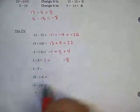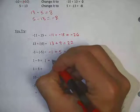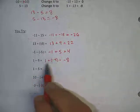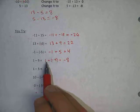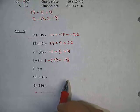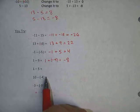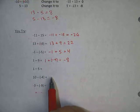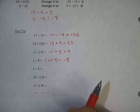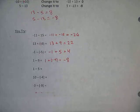One more: 1 minus 9. I know 9 minus 1 is 8, so 1 minus 9 is negative 8. But let's use keep, change, change: keep the 1, change subtraction to addition, change positive 9 to negative 9. Think about your cards — if you have a positive 1 and a negative 9, you have more negatives. How many more? 8. So it's negative 8. You can think about it two different ways; as long as you're getting the right answer it doesn't matter. Now I want you to try the last three on your own — I want to see the change, change, change, and then the answer.